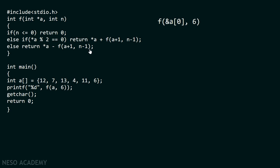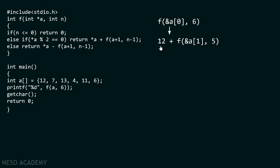If a number is even, the statement will be: star A plus F of (A plus one, n minus one). If the number is odd, it will be: star A minus F of (A plus one, n minus one). In this case, pointer A points to the first element of the array, which contains value 12, and 12 is an even number. Therefore, we return 12 plus F of (&A[1], 5). We don't know the output of this inner function yet, so we first have to call it and whatever it returns we will add to 12.